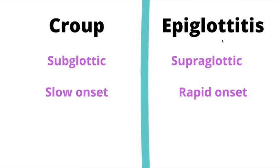Let's review and compare croup and epiglottitis. Remember that croup can affect patients up to 7 years old, while patients who have epiglottitis are a bit younger, affecting patients between the ages of 3 months to 3 years old. Of course, epiglottitis can also affect adults. Croup is subglottic, while epiglottitis is supraglottic. Also, the onset of croup is a bit slow, while in epiglottitis it's very rapid.